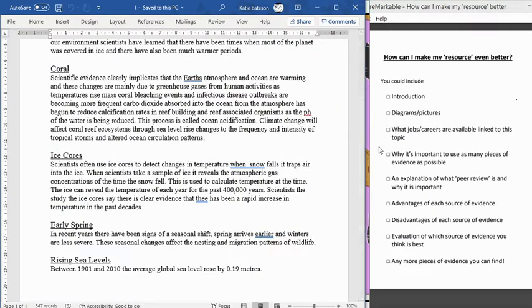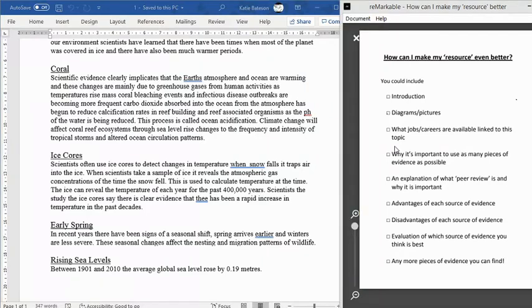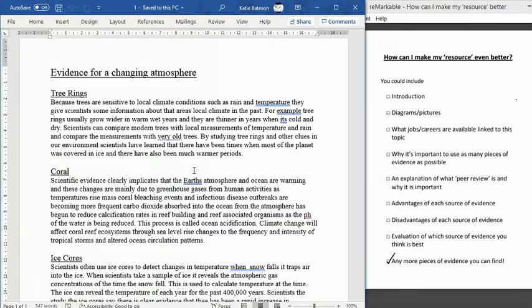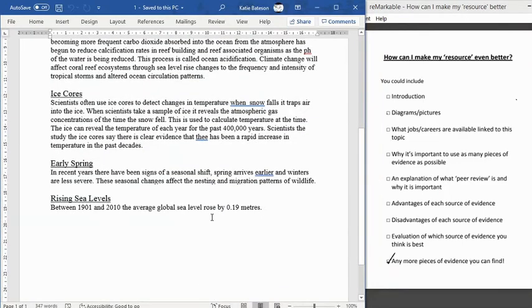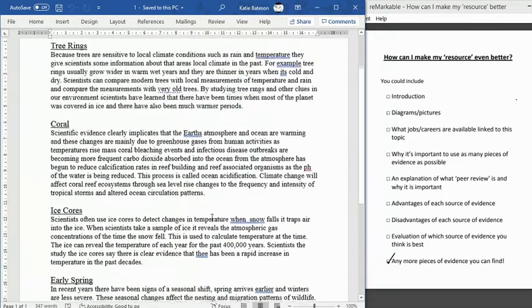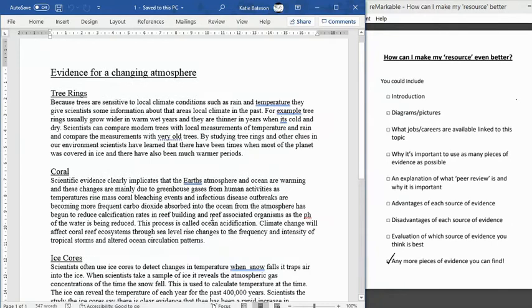As you can see on this one, they've produced a really nice poster. If they wanted to improve their work further, they could potentially include an introduction, an evaluation of which source of evidence they think is best. This next one is a really nice example of a word process document in which they've covered tree rings, coral, ice cores, and some additional source of evidence.